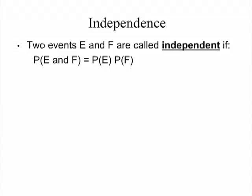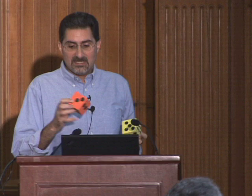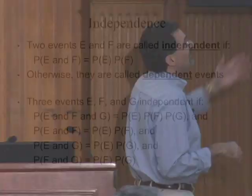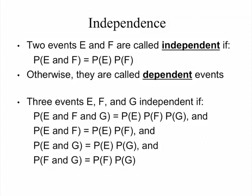Now let's think about independence. Independence is where I do two things where the outcome of one does not necessarily impact the outcome of the other. If that's the case, the two events are independent, and the probability of rolling a 1 here and rolling a 1 here is just the product 1/6 times 1/6. Otherwise they're called dependent. For example, how successful you are in your career may be dependent on the place you went to college — that would be a dependent event. For three events E, F, and G to be independent, every pair must be independent and all three must be independent.